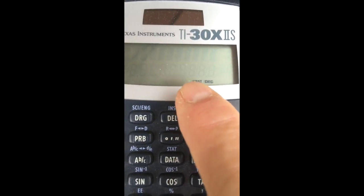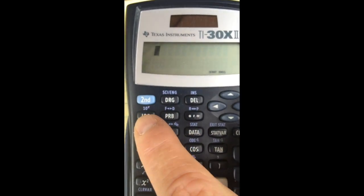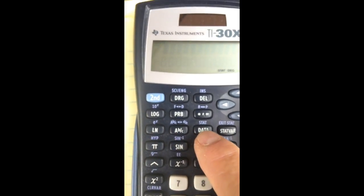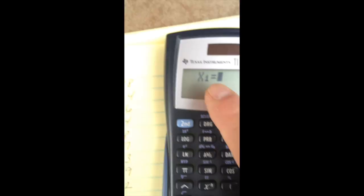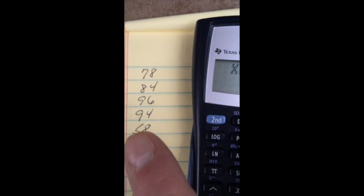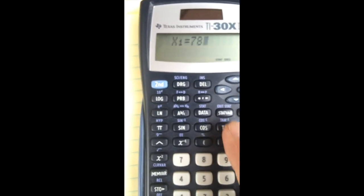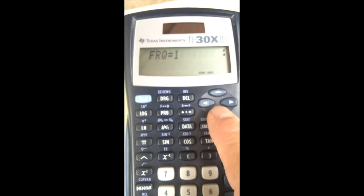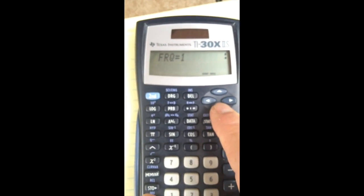Now, you'll notice it says stat. Now, the calculator is ready for the data. What we have to do, then, is hit the data key, and notice it says, okay, what's the first number? The first number is 78, so we'll type 78, down arrow. It says, how many do I have? And these are all single, so frequency is 1.